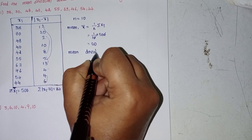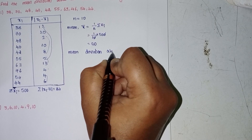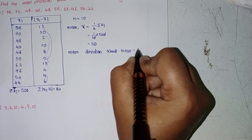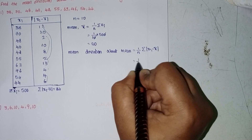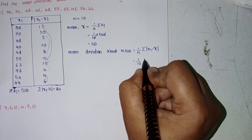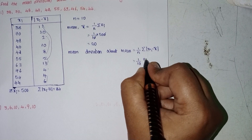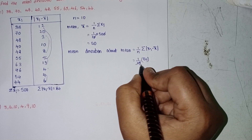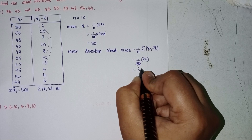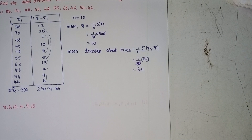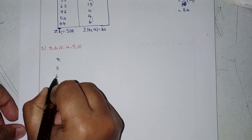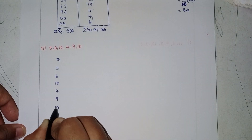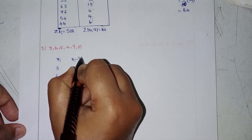Mean deviation about the mean = (1/n) × summation |xi − x̄|. Here n = 10 and summation |xi − x̄| = 84. So mean deviation = 84/10 = 8.4. This is the required solution.